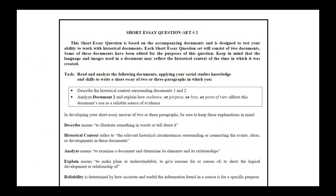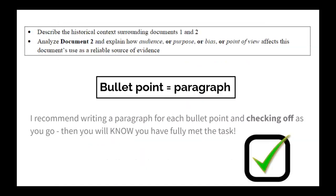If we look at the task you will be given, it'll tell you that it's based on these documents and testing your ability to work with them. What you really want to pay attention to are these two bullet points — this is your task box. The first thing you'll be doing is describing the historical context surrounding documents one and two, and then you'll analyze document two specifically, explaining how audience, purpose, bias, or point of view affects the document's use as a reliable source of evidence. My recommendation is to think of each bullet point as one paragraph to write.